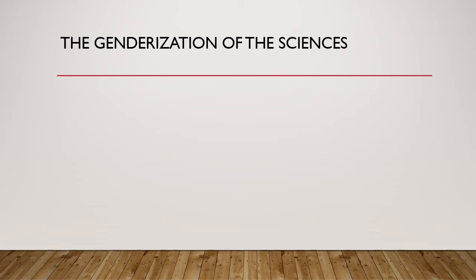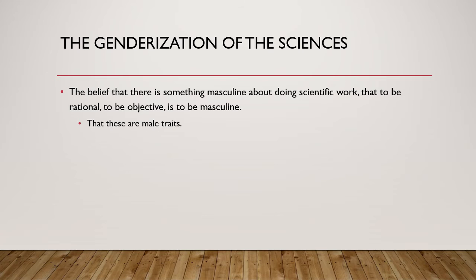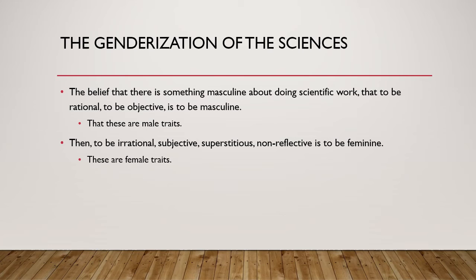Keller's claims regard the genderization of the sciences — the belief that there's something masculine about doing science, that to be rational or objective in the ways science requires is to be masculine, and these are traits men are most suited to. On the opposite end, to be irrational, subjective, superstitious, or non-reflective is to be feminine. If you took these stereotypes at face value — and they're false — you'd conclude men are naturally predisposed to the sciences while women have to work against their supposed natural traits.